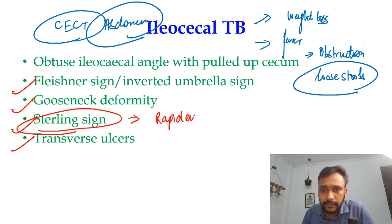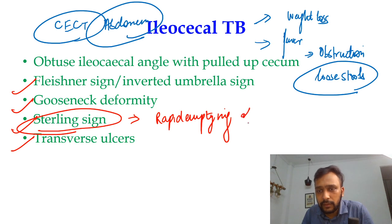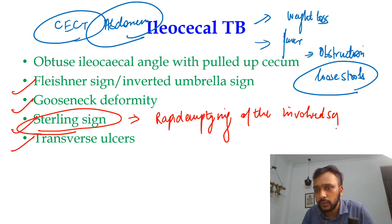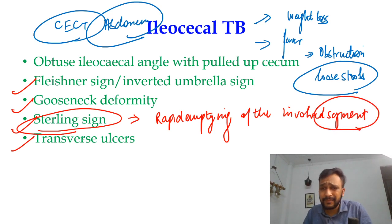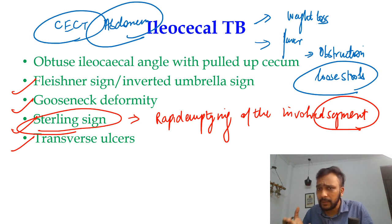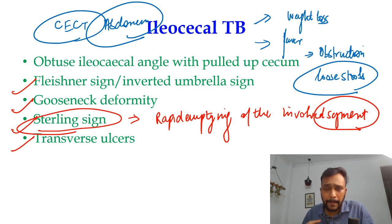Sterling sign is rapid emptying of the involved segment of the bowel loop. The theory behind this is that any segment of the bowel loop that is involved — for example, your terminal ileum and cecum — because of the irritation by the tuberculosis bacteria, barium will rapidly empty from that segment of the bowel loop. That is your Sterling sign.